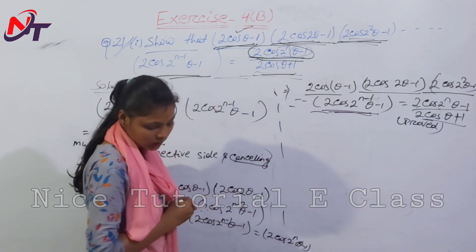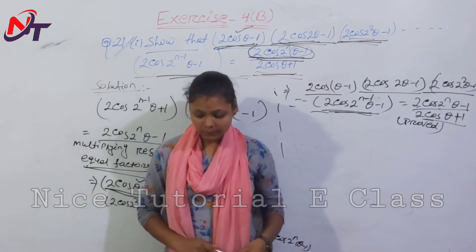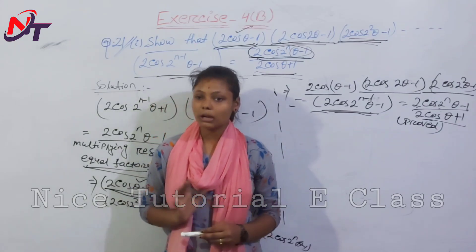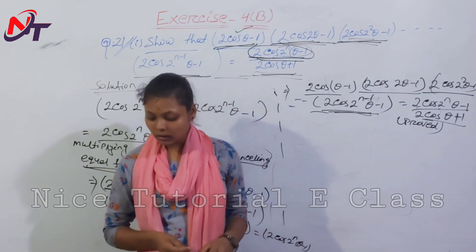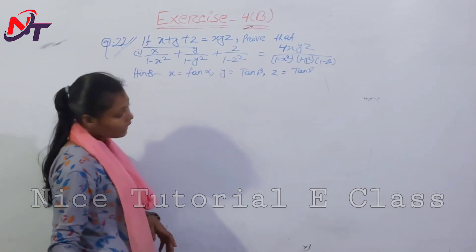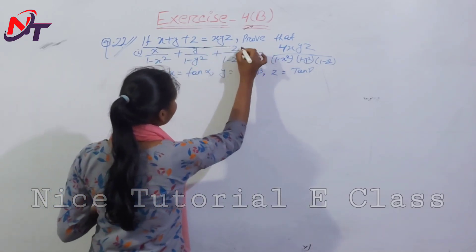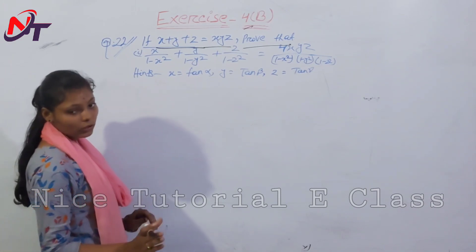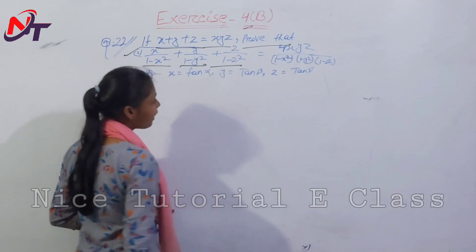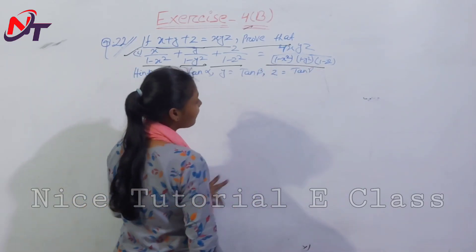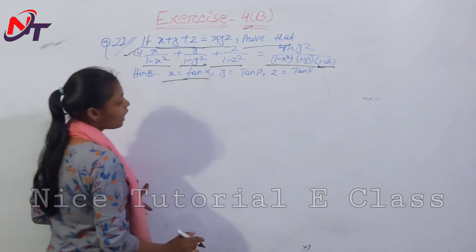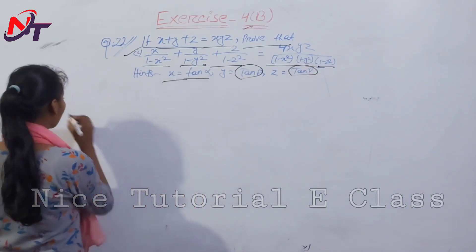Question number 21 is done. Now the next question is question number 22. Question number 22: if x + y + z = xyz, then prove that x/(1 − x²) + y/(1 − y²) + z/(1 − z²) = 4xyz / [(1 − x²)(1 − y²)(1 − z²)].